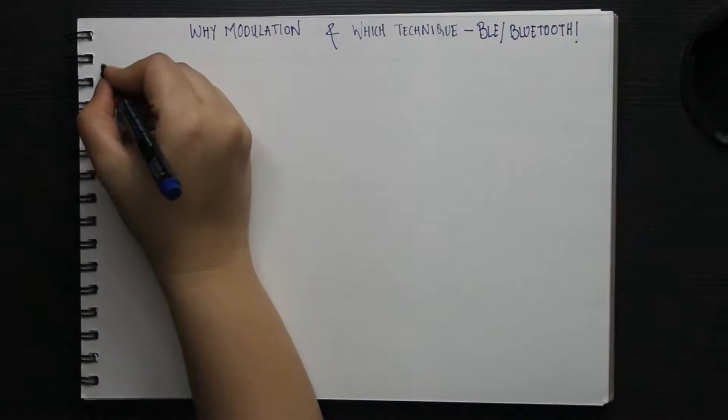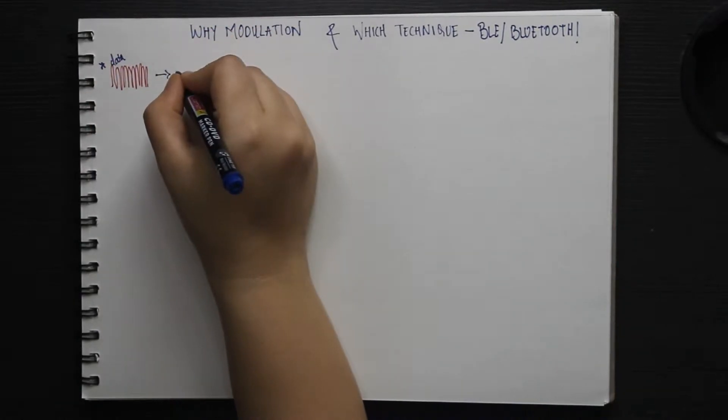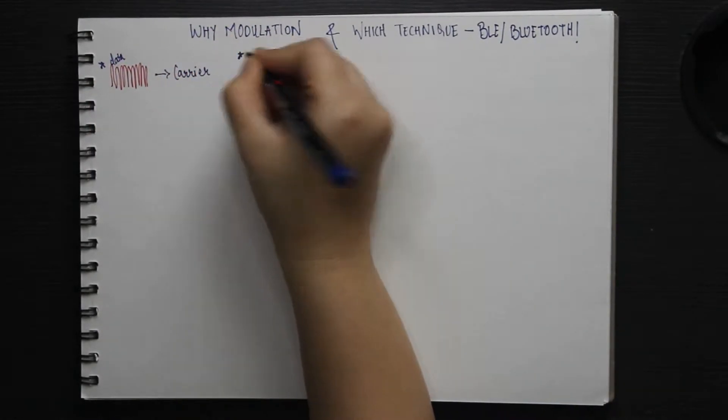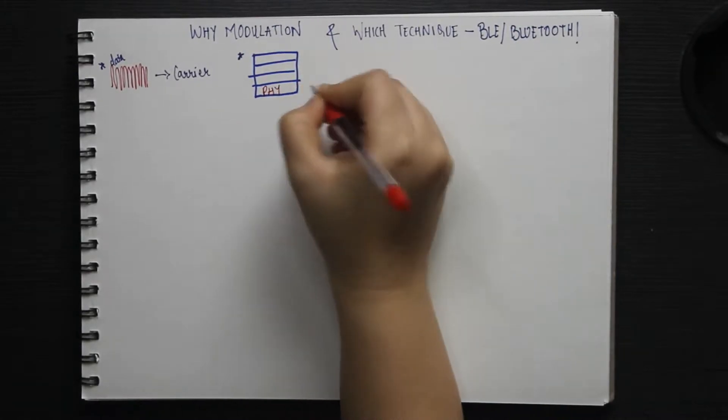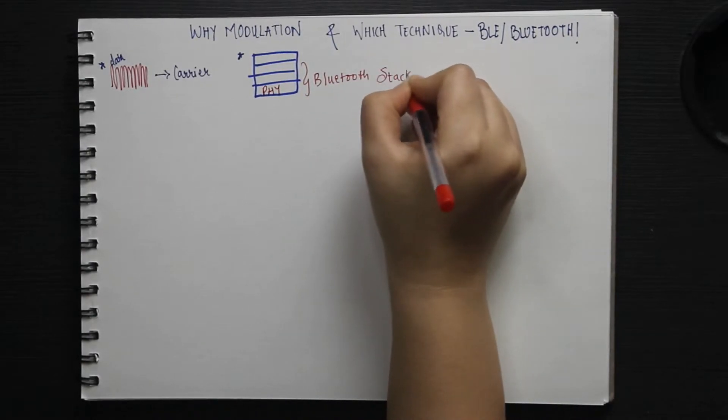This will allow us to understand how radio is used as a carrier for digital data. In the Bluetooth stack, these issues are dealt with in the physical layer. So, let's first understand what is modulation.